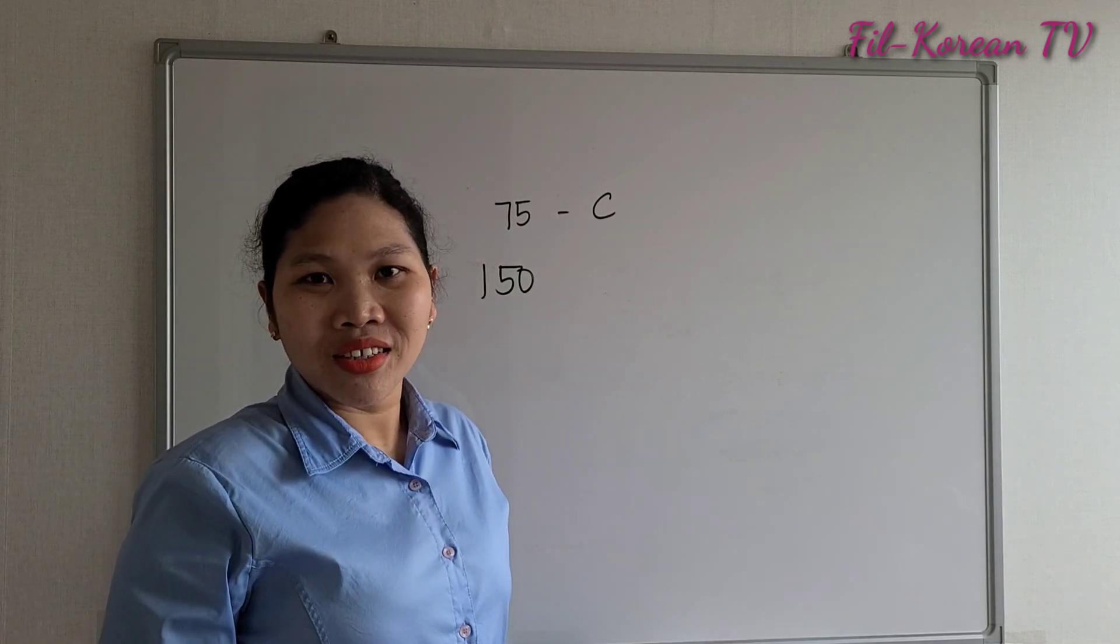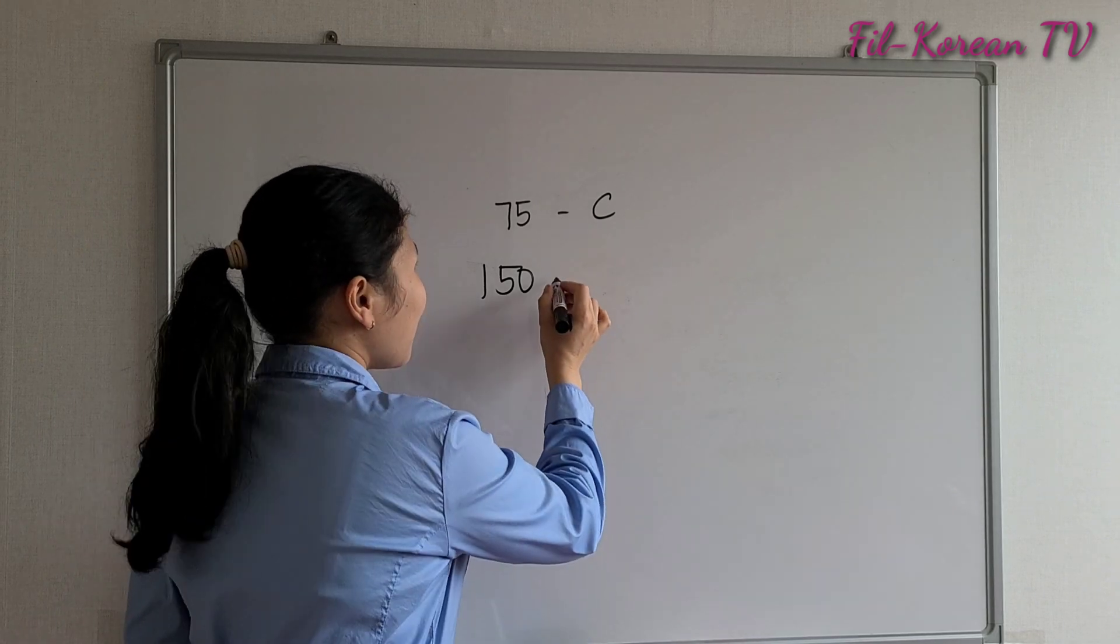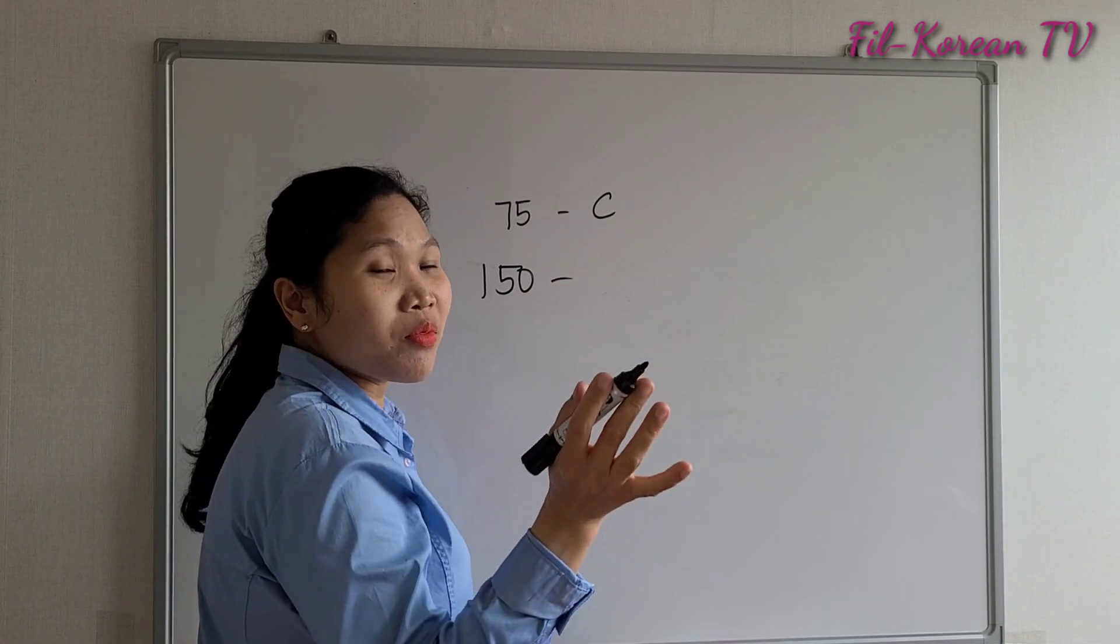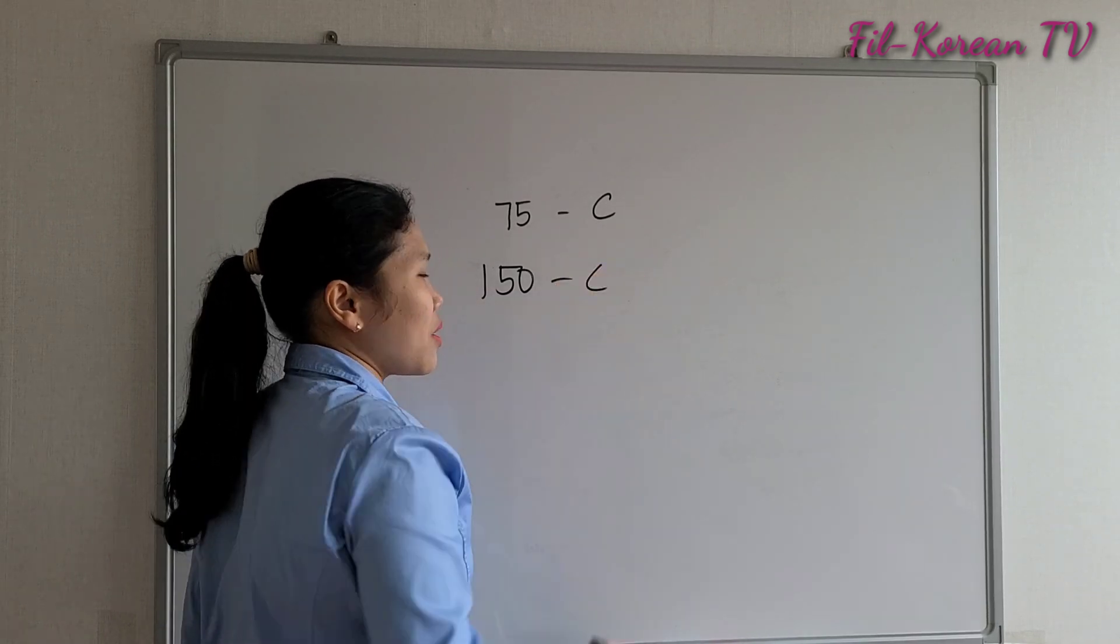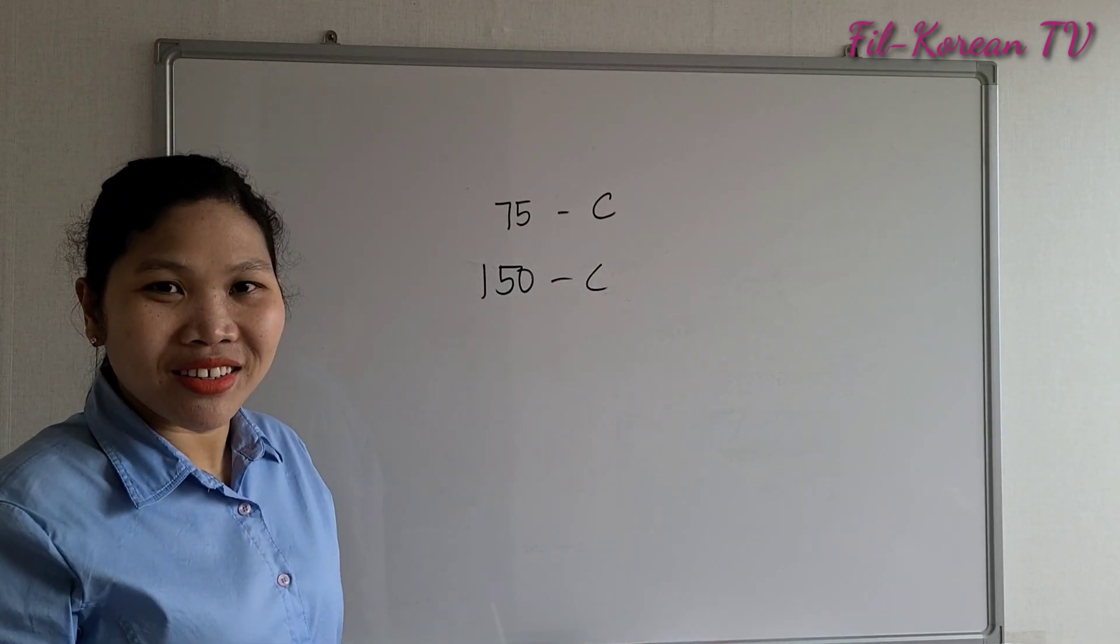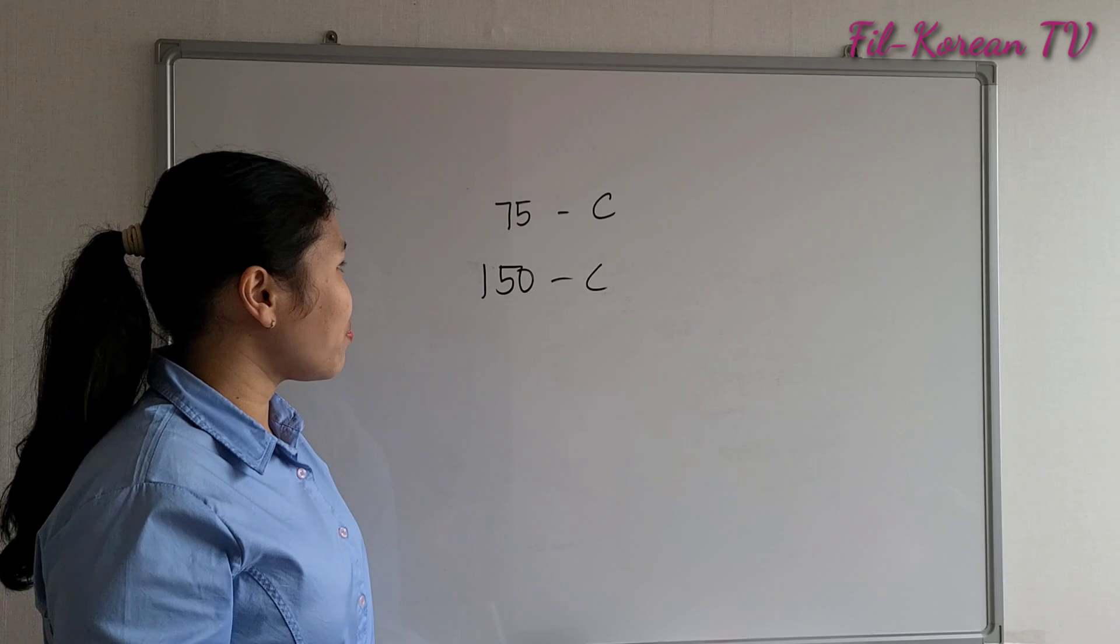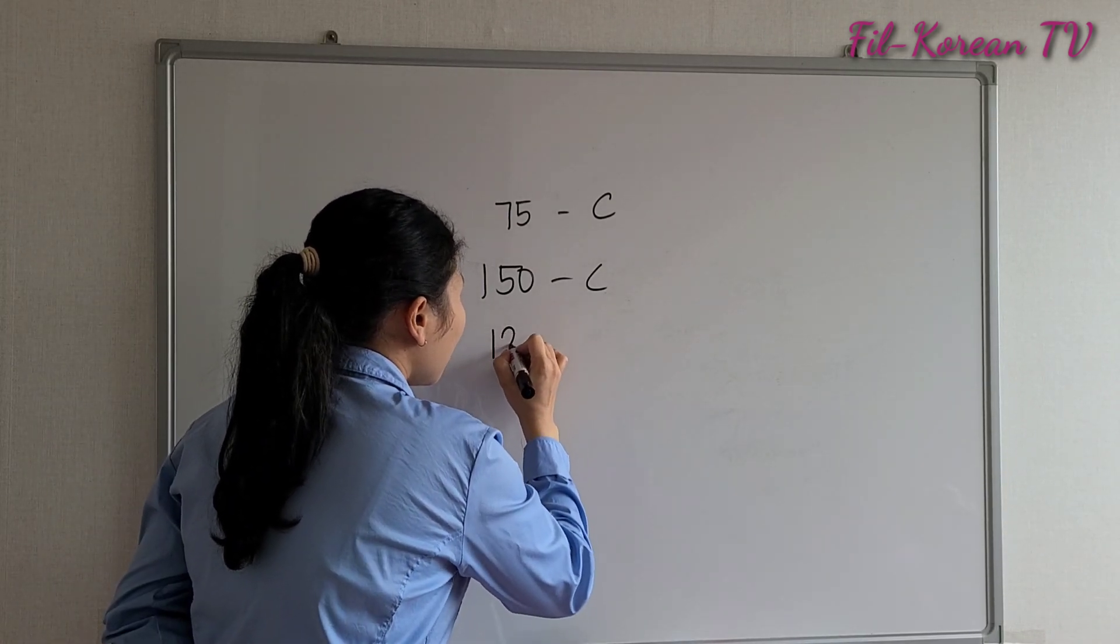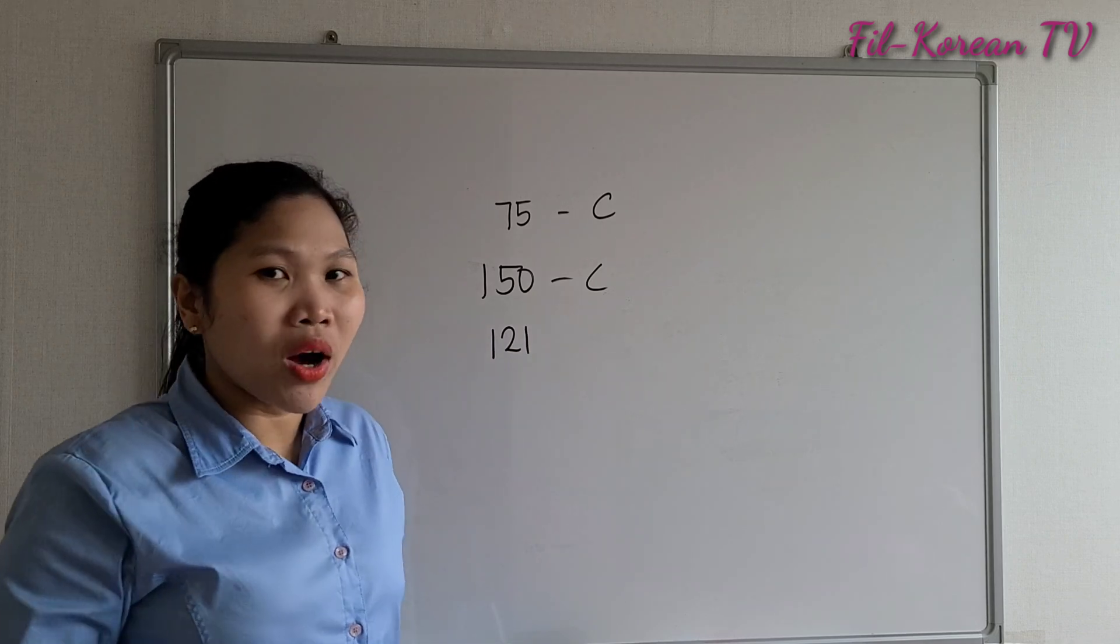One hundred fifty. It ends with zero, divisible by five. And then, automatic composite number. That's it. And then, this one: one hundred twenty-one.